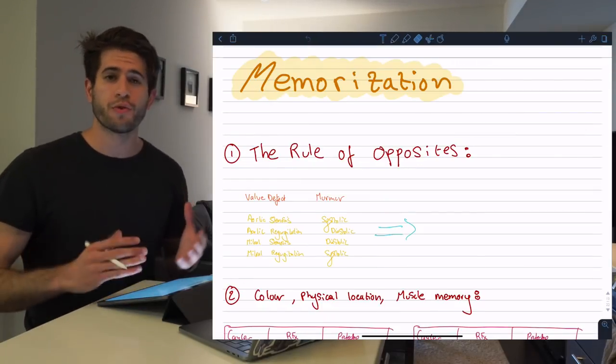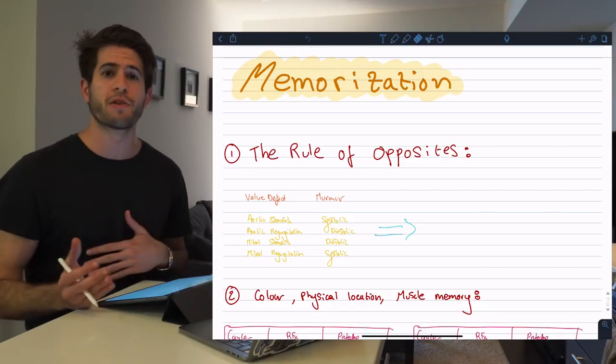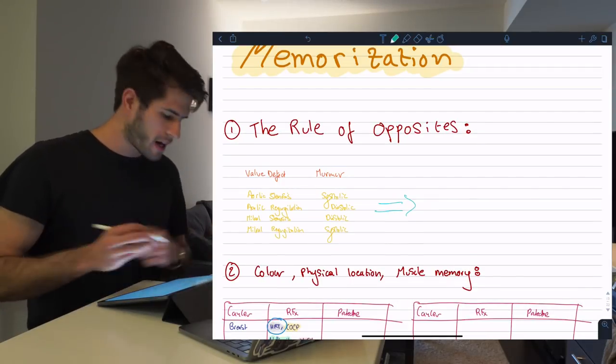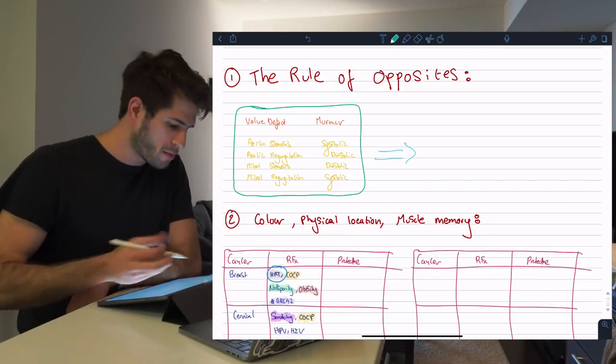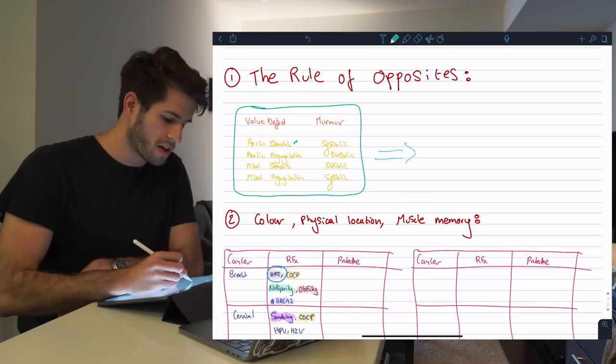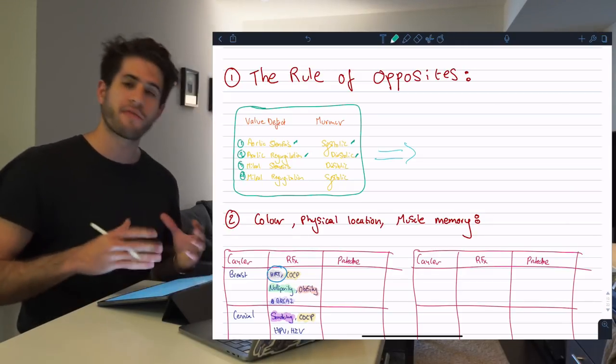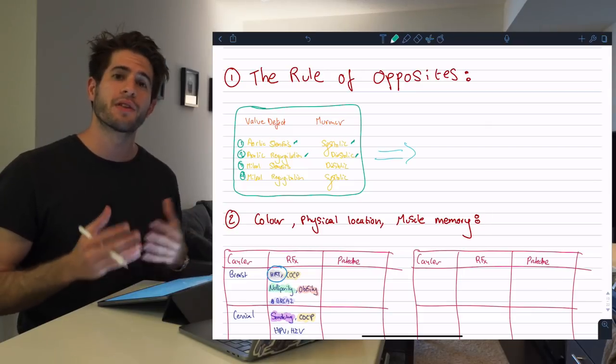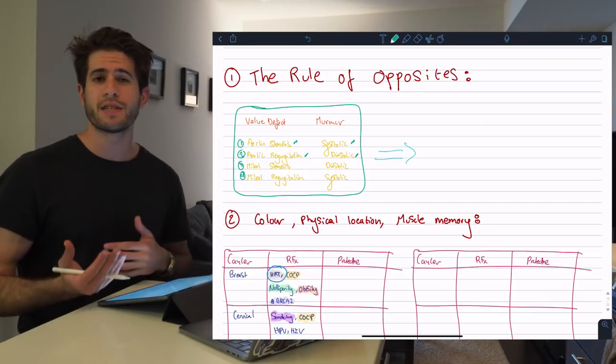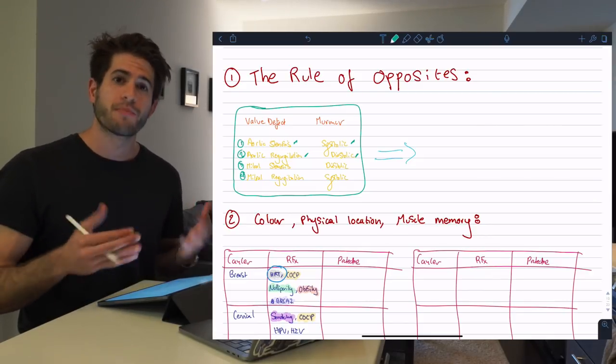The first thing I want to talk about is what I call the rule of opposites. Many times, especially in medicine, you can memorize a bunch of different things just by simply remembering that something is the opposite of the other. For example, at some point I needed to remember these four valve defects and whether they occurred in diastole or systole. You can see in this table that aortic stenosis will be heard in systole, aortic regurgitation in diastole and so on. I have four different relationships to remember, however I can memorize this whole table by only memorizing one relationship.